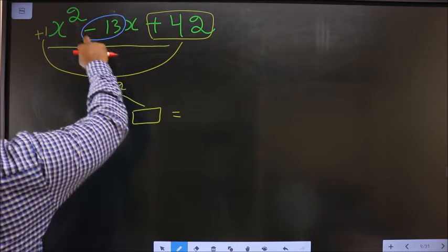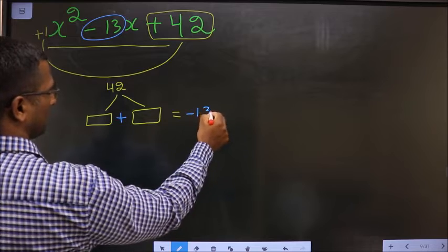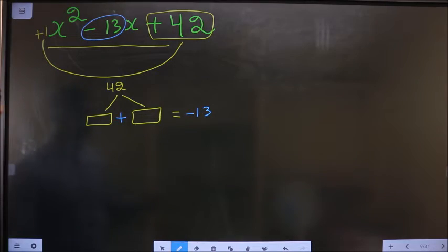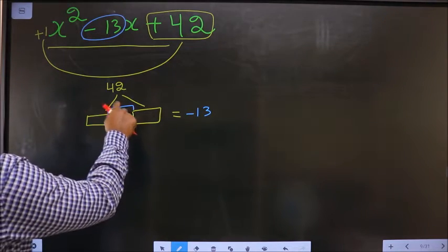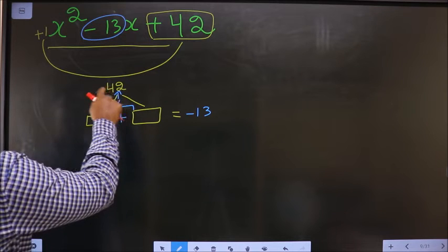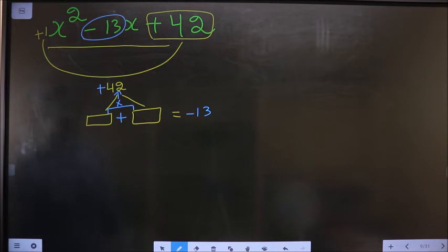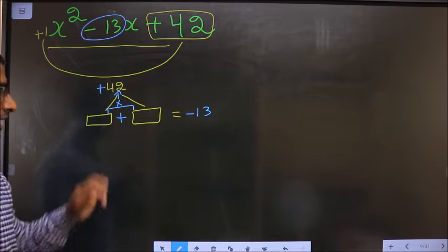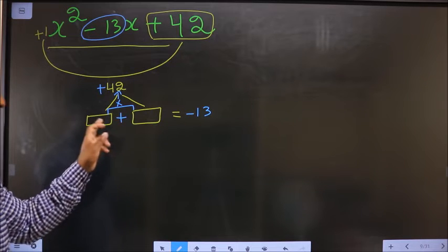And also when you multiply the two numbers you should get +42. Look out for two numbers such that when you add you should get -13, when you multiply you should get +42. How do you get those two numbers?